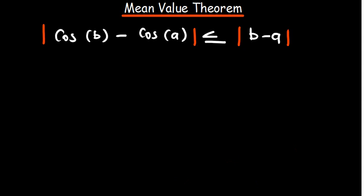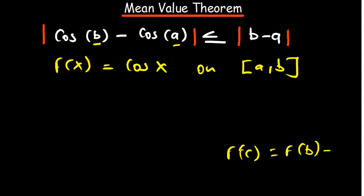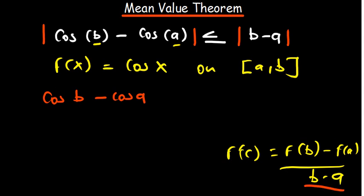First, I'm going to work on the left hand side. In this case our f(x) is going to be equivalent to cosine of x, and we are looking at the interval a and b. So we have f(b) minus f(a) divided by b minus a, which gives us cosine of b minus cosine of a, all divided by b minus a.